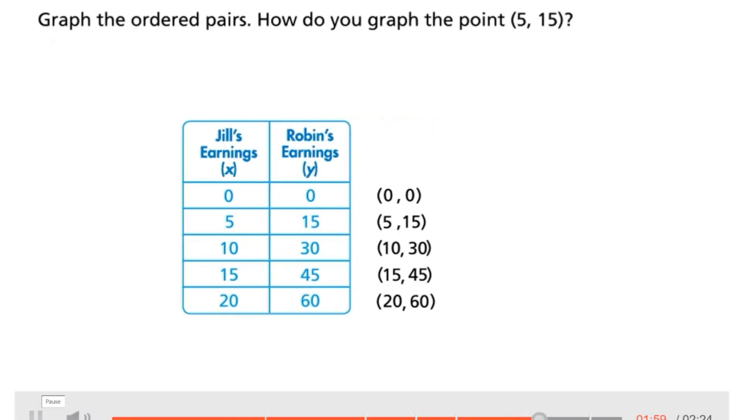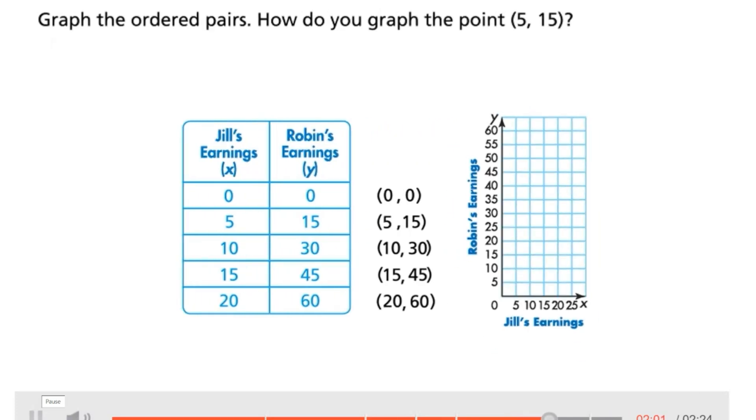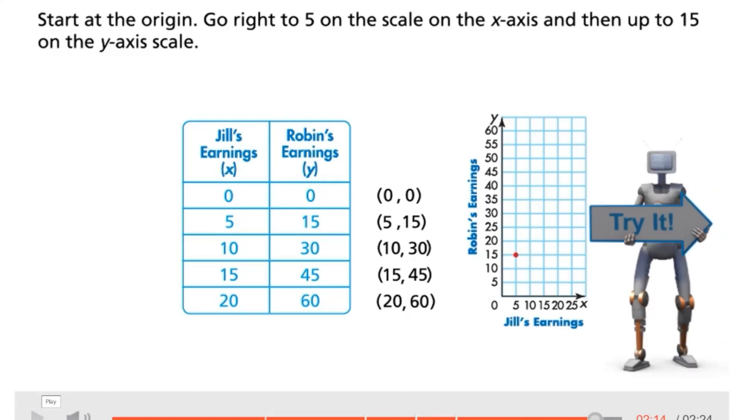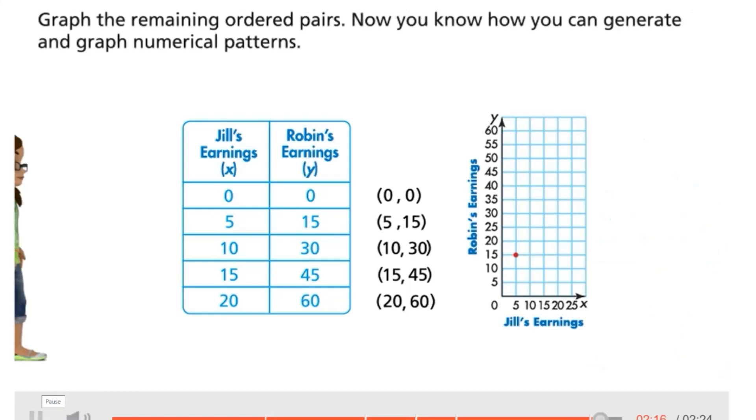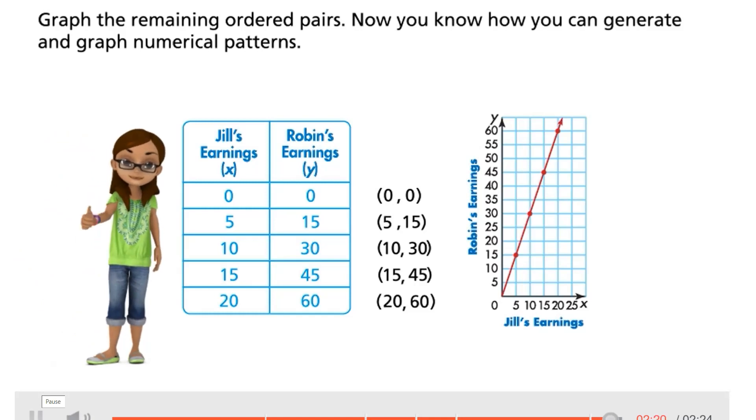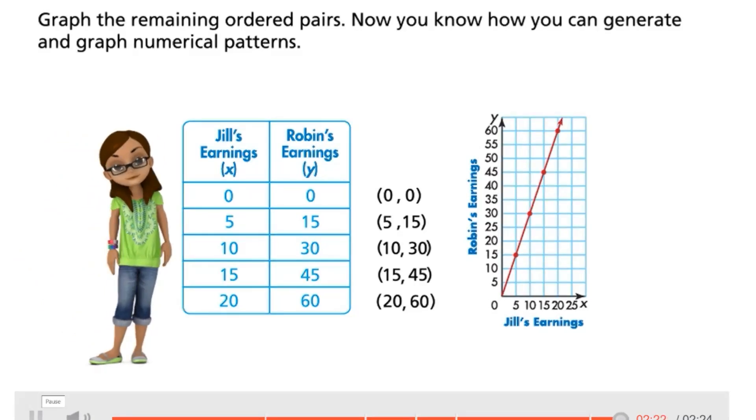Graph the ordered pairs. How do you graph the point five, fifteen? Start at the origin. Go right to five on the scale on the x-axis and then up to fifteen on the y-axis scale. Graph the remaining ordered pairs. Now you know how you can generate and graph numerical patterns.